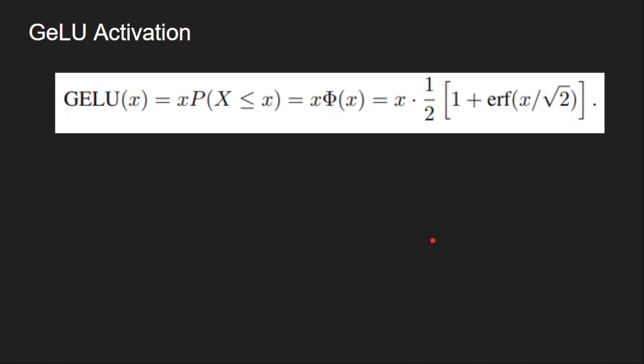By doing some substitutions we can represent Φ(x) in terms of erf, and our GELU activation function x times Φ(x) becomes expressed in terms of erf. So finally we have reached our definition of GELU activation: x times Φ(x), represented in terms of the error function.